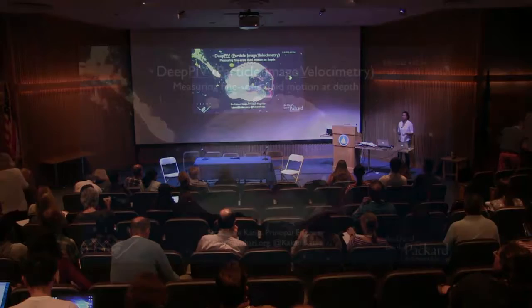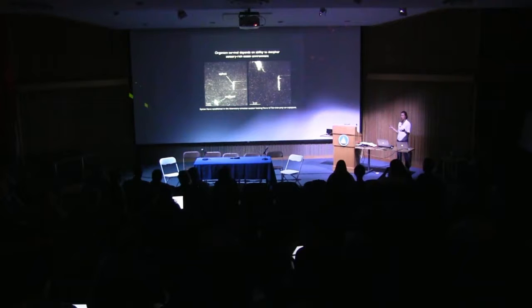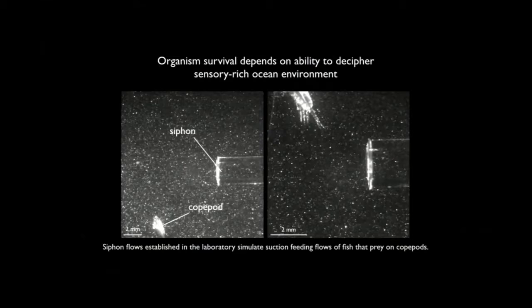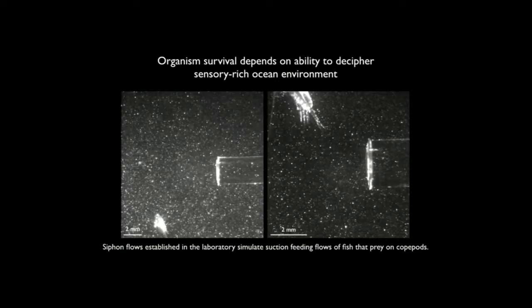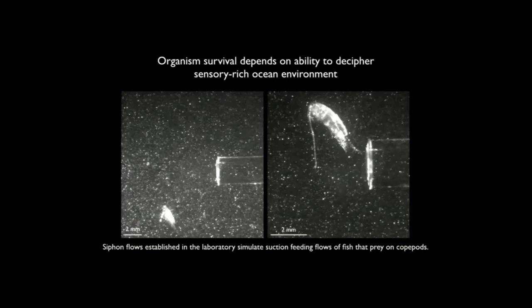First, a reason for why we should care about these really small-scale fluid motions. These are scales that are really relevant to individual organisms when they're trying to avoid predation or find food. This is an example of a lab setup at UH during a postdoc, where the suction feeding flow of a fish was simulated using a siphon, with copepods placed in the same tank. These animals have the ability to detect hydrodynamic signatures, and once they reach a location with a high enough signature, that results in an escape response — which can be the difference between life and death.